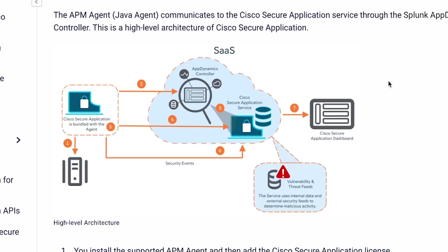The Cisco Secure Application service controls whether or not the security features are enabled for a given application. The APM agent communicates with the service to check whether or not the security features are enabled for that application. If the security features are enabled, the agent will download the security configuration along with the policies from the Cisco Secure Application service. Based on those policies, the agent will then send relevant security events to the service, which will display all of the data on the Cisco Secure Application dashboard.